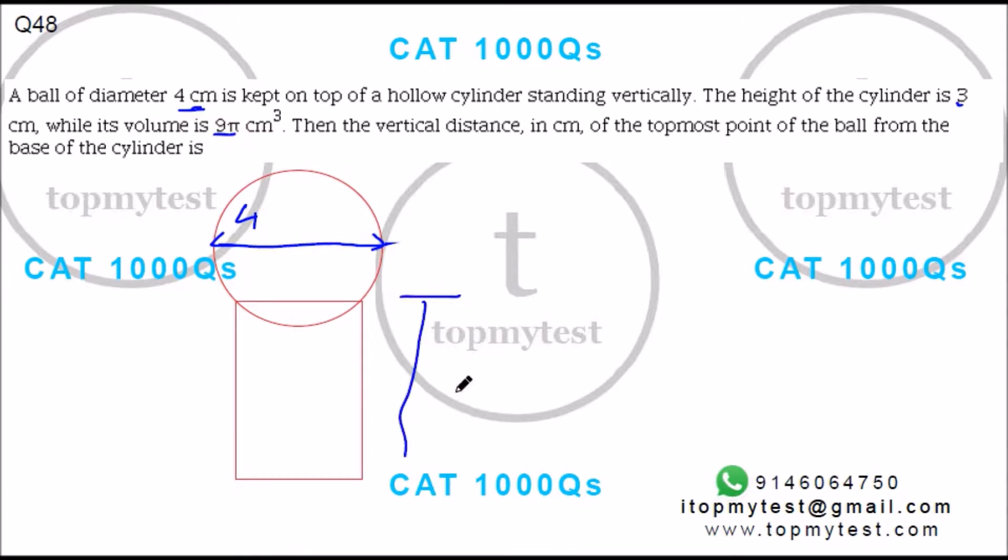So this height is 3 units. Now volume is πr²h. H is 3. This is 9. So r should be √3. Radius of this cylinder should be √3.